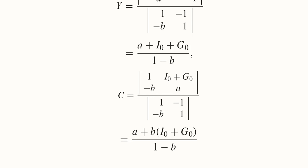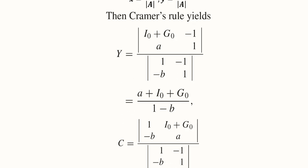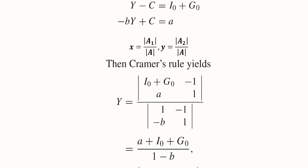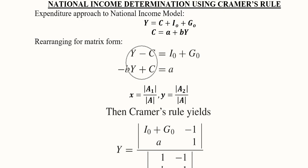This is the answer of the determinant in the numerator, and this is the answer of the determinant in the denominator. So we have found the equilibrium value of consumption and equilibrium value of national income. This was Cramer's rule, this was the rearrangement.